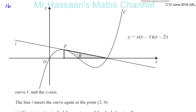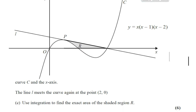Now for part C from question number 16, C12, June 2016, we are asked to find the area under this curve. We're supposed to find the exact area of this region called R. It says the line L meets the curve again at the point (2, 0). So I know that this point here is (2, 0), because that's point 2.